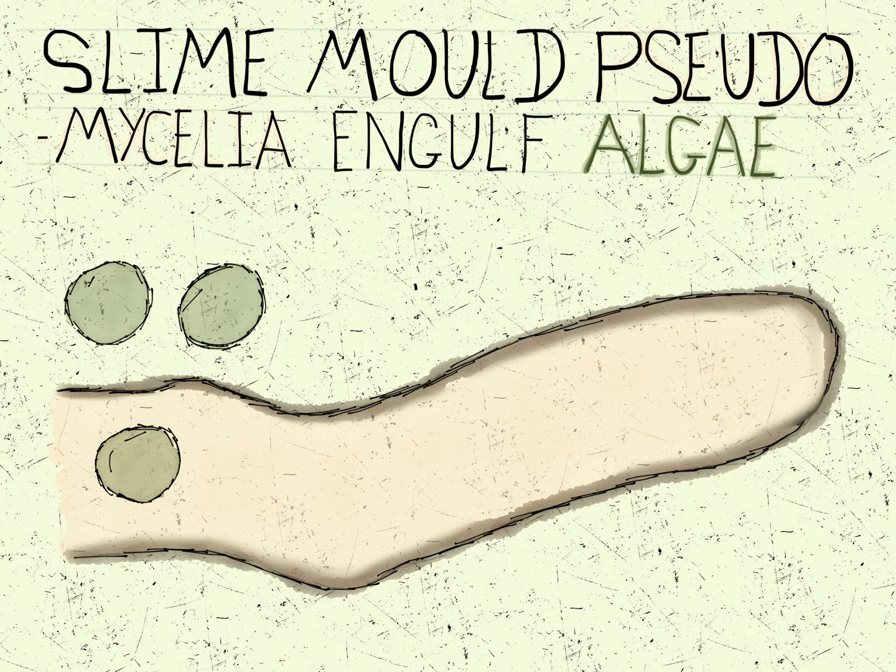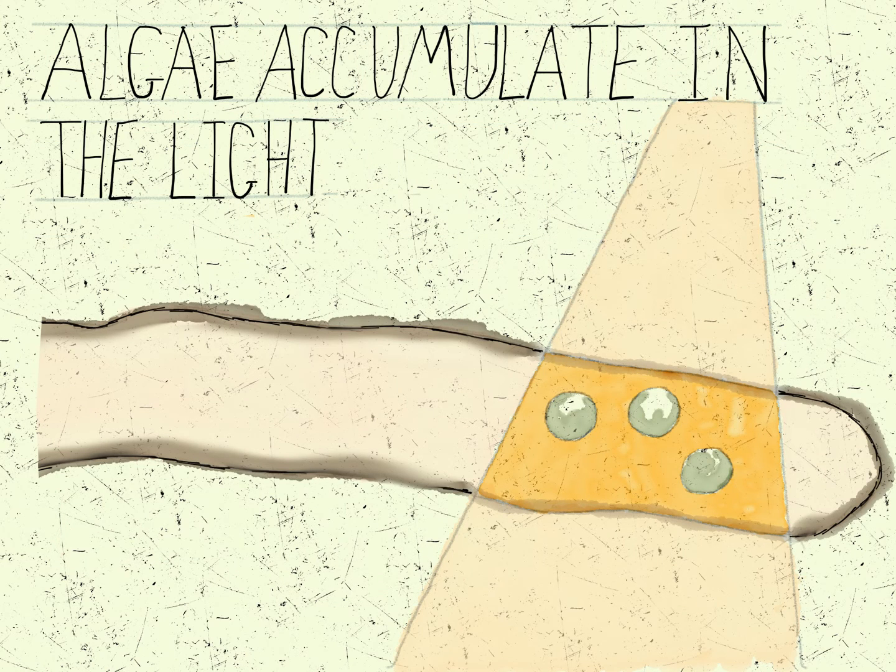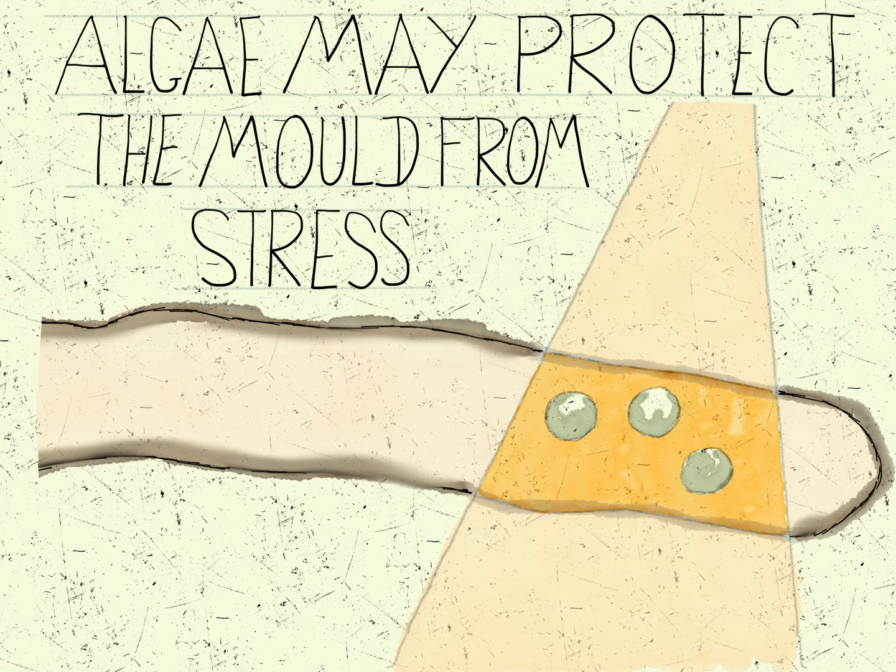In the paper we talk about other systems. So there's other situations where two different microorganisms come together, one aids the dispersal of the other and may get something back in return. So another system is algae which are taken up by slime molds and the algae can move inside the slime mold and give benefit. Both grow, accumulate in different areas and give benefits to the slime mold in terms of stress resistance.